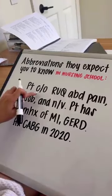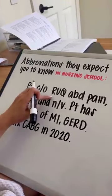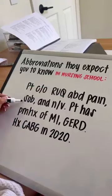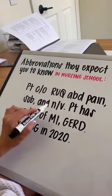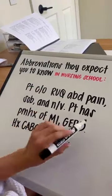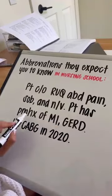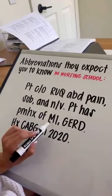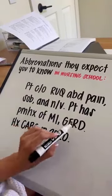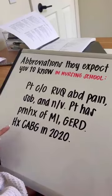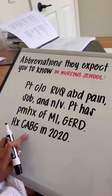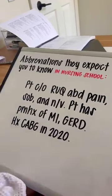Patient complains of right upper quadrant abdominal pain, shortness of breath, and nausea and vomiting. Patient has past medical history of MI, which is a heart attack; GERD, which is reflux; and a history of a cabbage in 2020.